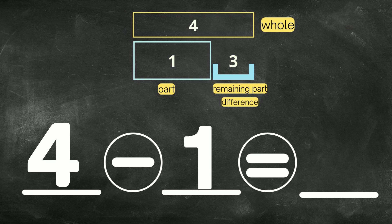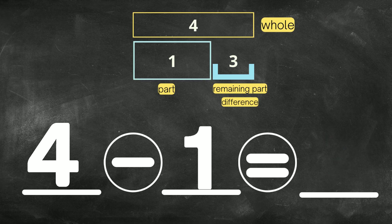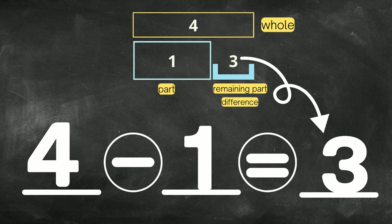So now we have 4 minus 1. So now what is the difference? So 4 minus 1 equals what? 4 minus 1, we said, was equal to 3. That's the remaining part, right? So I'm going to go ahead and put that remaining part right there on that last line.